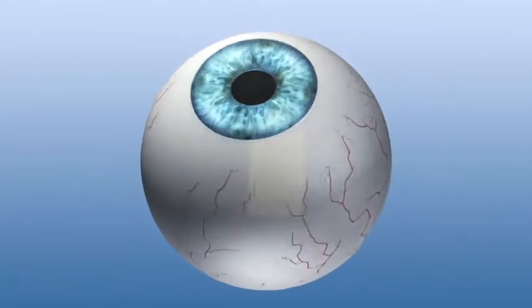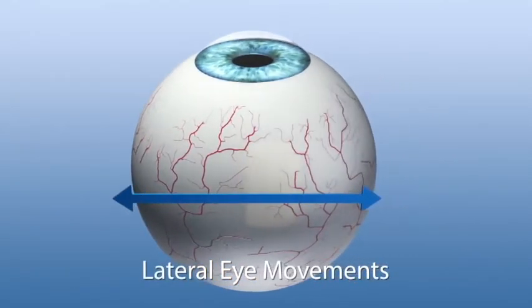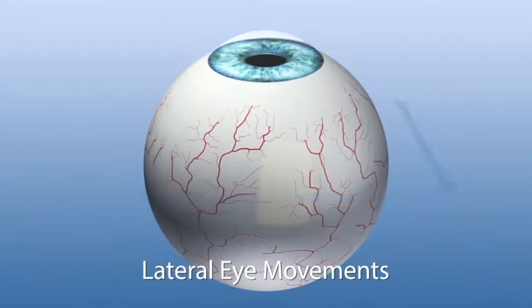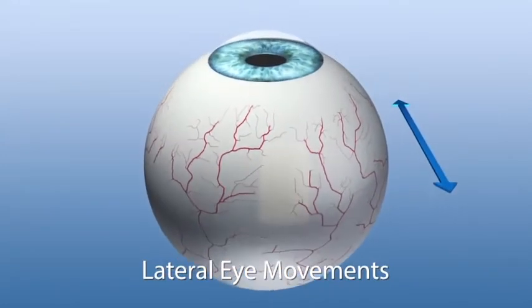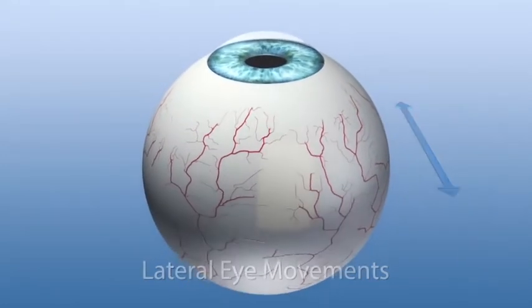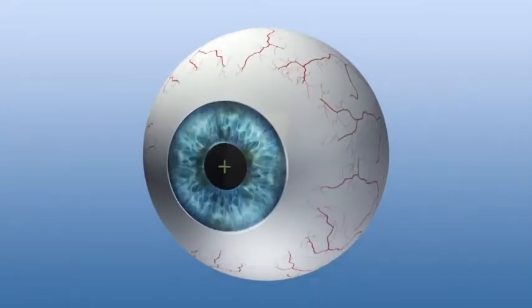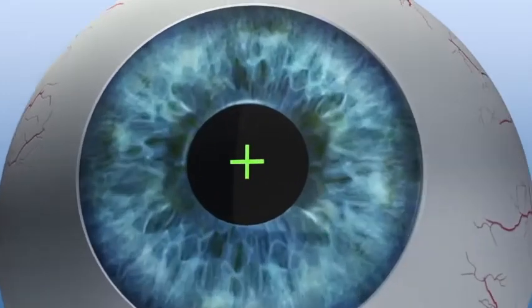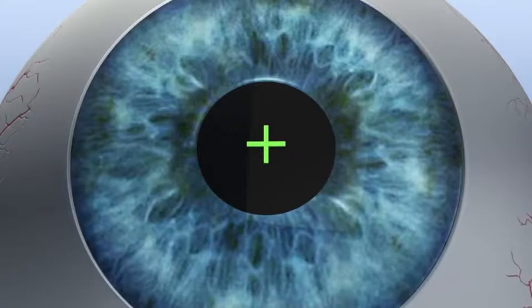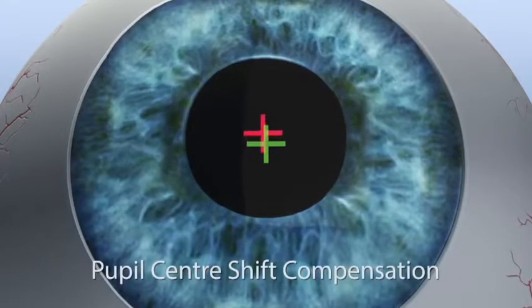Besides usual lateral eye movements, the sophisticated eye tracking system offers numerous performance features, making it gold standard among other eye tracking systems. Simultaneously with pupil detection, the eye tracker also detects the limbus and compensates for the pupil shift under different life conditions.